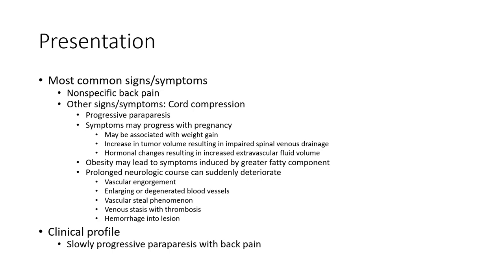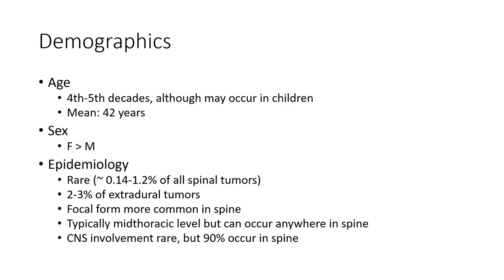Clinical profile shows slowly progressive paralysis. Demographically, it occurs in the fourth to fifth decade, although it may occur in children, with a mean age of 42 years. Female predominance is noted.